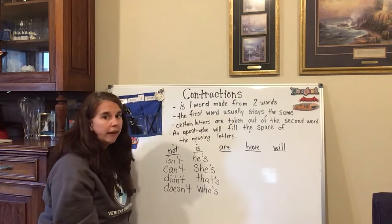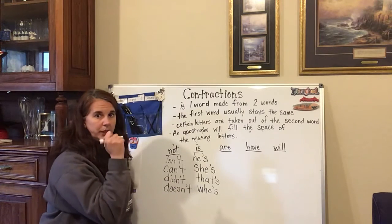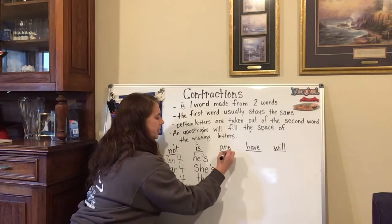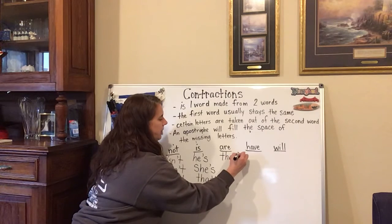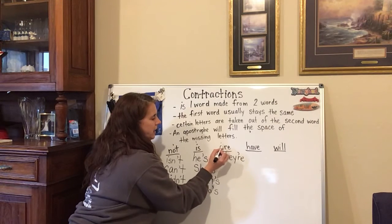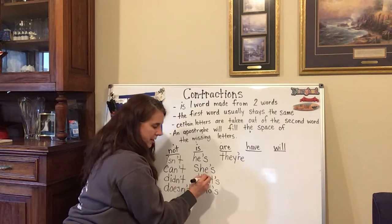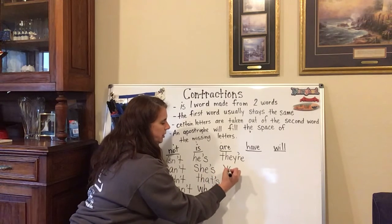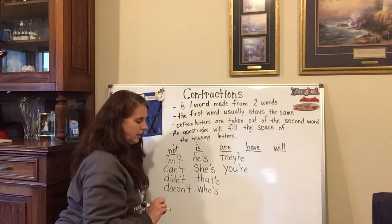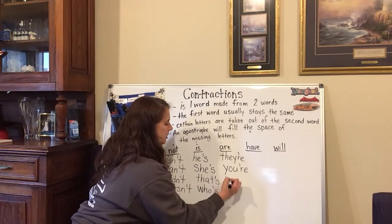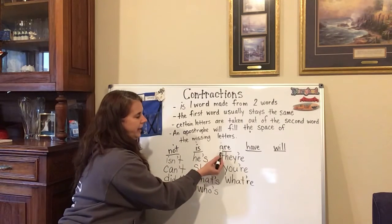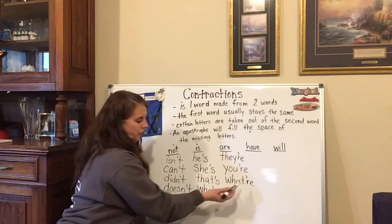Now let's move on to 'are.' The apostrophe, remember, is taking the place of some of the letters. So here we go to 'are.' 'They are' will be 'they're.' The apostrophe is taking the place of the A in 'are.' 'You are' becomes 'you're.' 'What are' — again, that apostrophe is taking the place of the A in 'are.' There's 'they're,' 'you're,' and 'what're.'